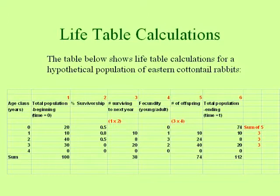That brings us to column five, which is the number of offspring produced per age class. To do this we need to multiply column three times column four. For age class one year, the ten individuals that survive to this next year each produce one young, so that counts to be ten total offspring. And the two-year-olds, of which there are eight, they each produce three young, so eight times three gives us twenty-four young. If we add up all the numbers of young produced by the various age classes, it comes to be seventy-four.